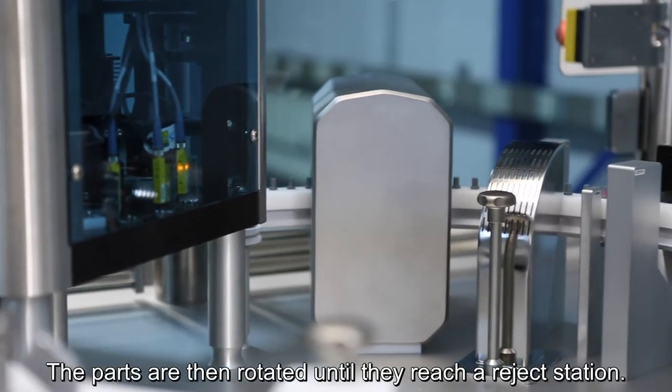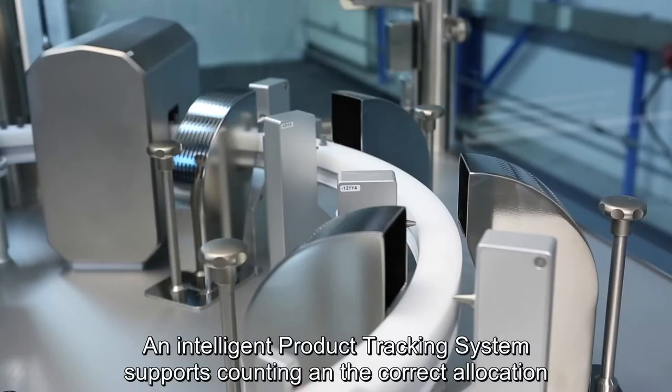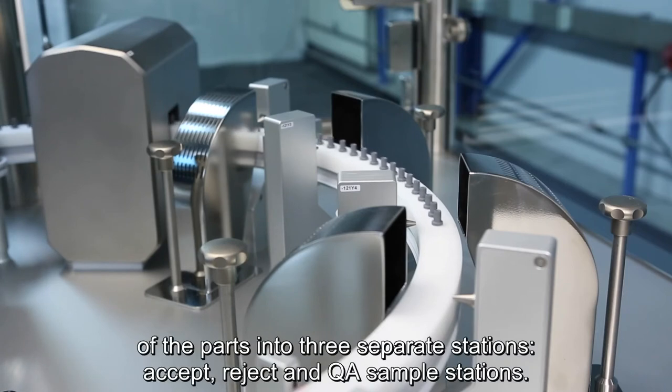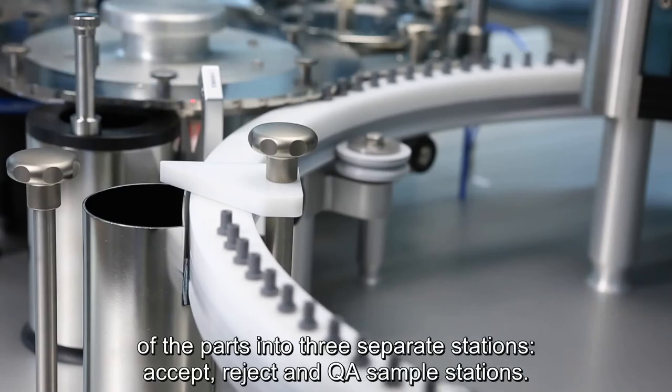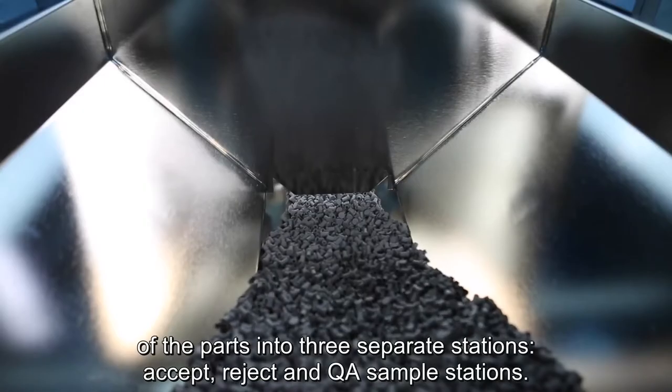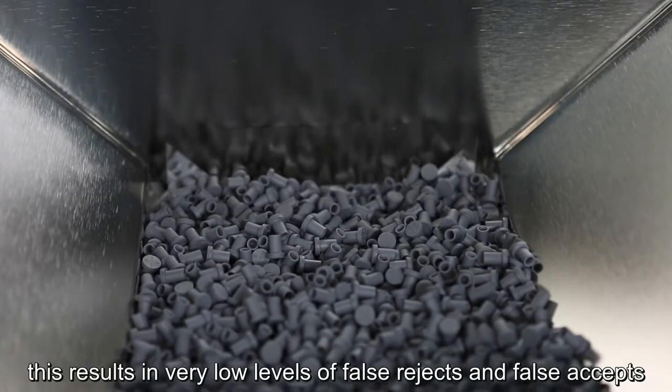The parts are then rotated until they reach a reject station. An intelligent product tracking system supports counting and correct allocation of parts into three separate stations: accept, reject, and QA sample. This results in a false acceptance of less than three products per million.